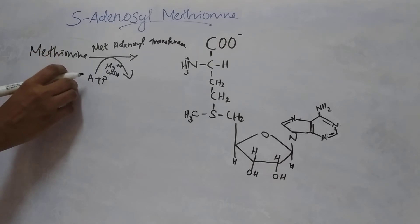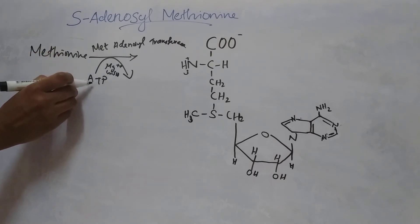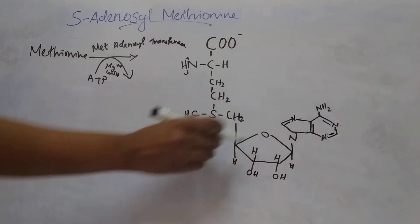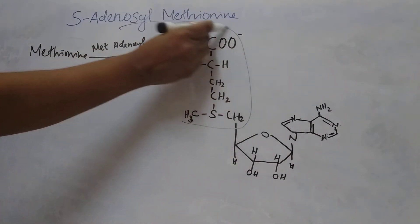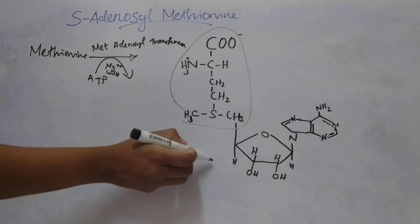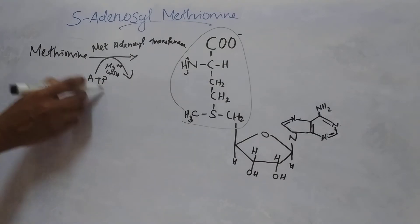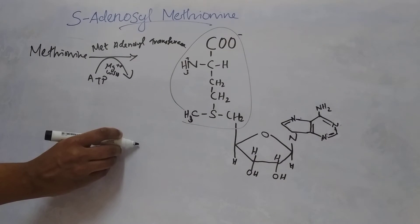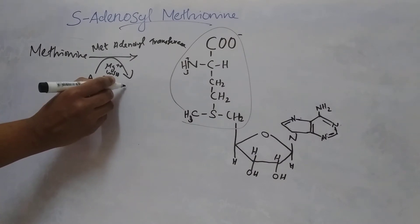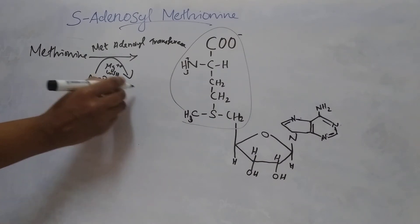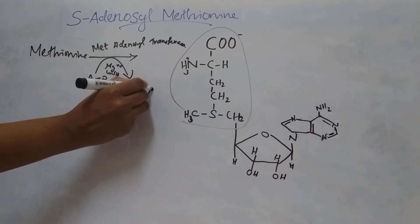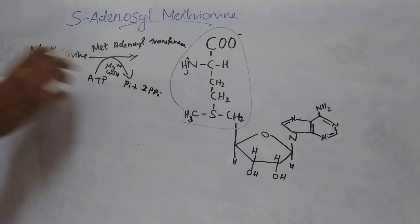In the process of activation, ATP donates its adenosine moiety to methionine and forms S-adenosyl methionine. Three molecules of phosphate are released: one orthophosphate (Pi) plus two pyrophosphate are formed in this reaction.